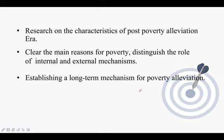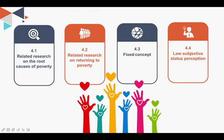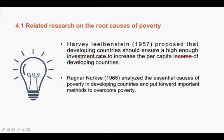In the fourth part — literature review — we divided the content into four areas. The first covers related research on root causes of poverty. We introduce Harvey Leibenstein (1956), who proposed that policies can develop a high enough investment rate to increase per capita income in developing countries — essentially having wealthy individuals invest to assist those living below average income levels.